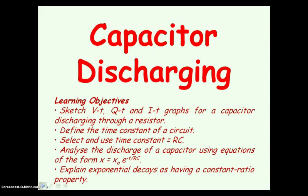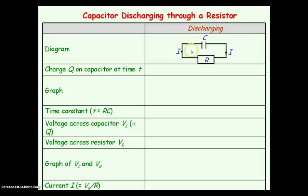Today we are going to look at the theory of the capacitor discharging. Here we have a circuit of a capacitor that was initially charged and now it has been connected across a resistor through which it is discharging. We are first going to look at the charge stored on the capacitor and how it is changing with time while the capacitor is discharging, and the equation for it is given by this.